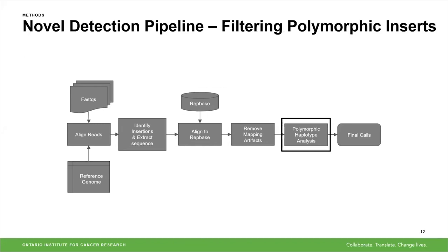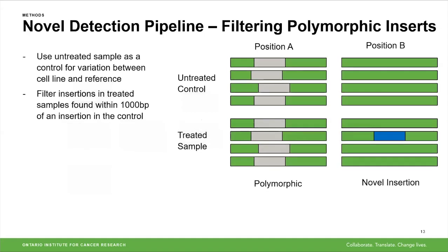Some of these insertions are novel and others are due to variation between the cell line and the reference — i.e., polymorphic insertions. The first step to filter out polymorphic insertions is to use the untreated sample as a control. We filter any insertions found in the treated samples within 1,000 base pairs of an insertion found in the control. At position A, insertions appear in both untreated and treated samples — likely polymorphic. At position B, nothing appears in the untreated control but an insertion appears in the treated sample, meaning it's likely novel.